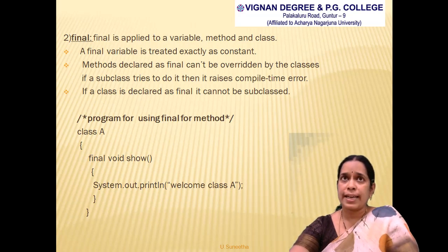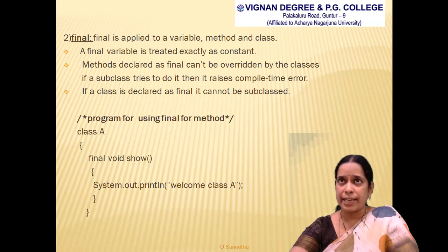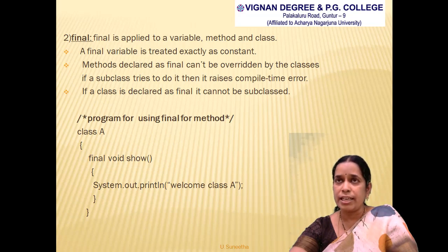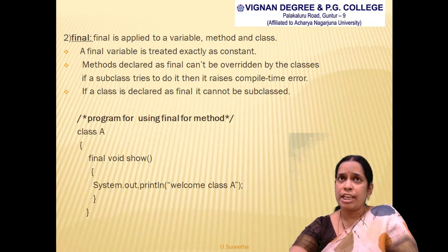Moving on to the second access modifier: 'final'. The final keyword can be applied to a variable, a method, or a class. If applied to a variable, that variable is treated as a constant. If applied before a method, that method cannot be overridden — we cannot create the same method in the subclass. If placed before a class, that class cannot be subclassed.